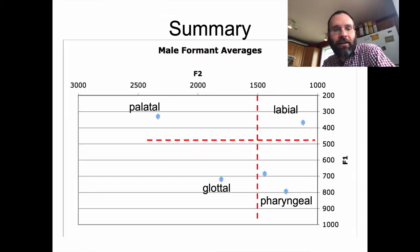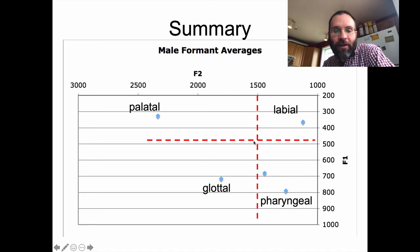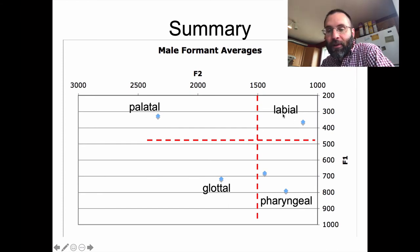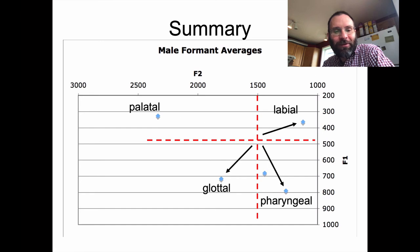You can shift both formants around somewhat independently, but there is some interaction to take into consideration — one that speakers of a language have learned to manage. You can describe the four quadrants of the vowel space in terms of individual articulatory positions: high front vowels are palatal; high back vowels are best reached with a labial constriction — which is incidentally why these vowels tend to be rounded; for a low back vowel you can make a pharyngeal constriction; and for a low front vowel it's more glottal.